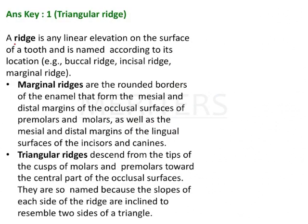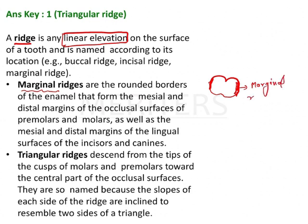Now let's see the explanation. A ridge is nothing but a linear elevation on the surface of a tooth and is named according to its location — buccal ridge, incisal ridge, marginal ridge — based on where it is present. The marginal ridge refers to elevations seen on the margins of the tooth, present on the mesial and distal occlusal surfaces of premolars and molars.